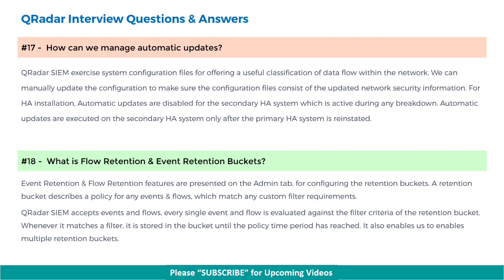Next, how can we manage automatic updates? QRadar SIEM uses system configuration files for offering a useful classification of data flow within the network. We can manually update the configuration to make sure the configuration files consist of the updated network security information. For HA installation, automatic updates are disabled for the secondary HA system, which is active during any breakdown. Automatic updates are executed on the secondary HA system only after the primary HA system is reinstated.